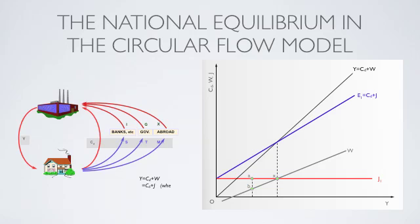At point Z, expenditure equals income. This is the equilibrium level of national income. It relates to point X, where injections equal withdrawals.